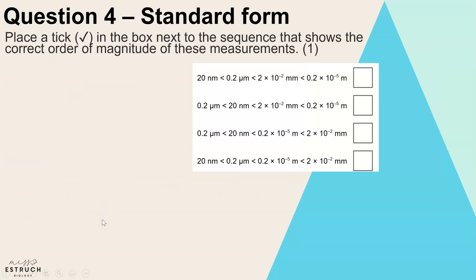Question four is on standard form and you're asked to tick the box that shows the correct sequence for the order of magnitude. Now at first glance, that looks pretty overwhelming, but the main thing to notice if you have a quick look through is it's the same five values used over and over in different orders.